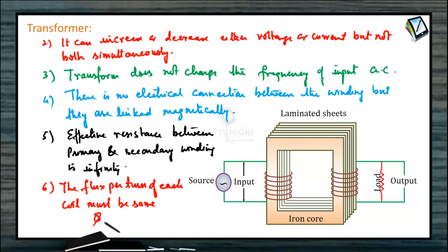So flux of secondary and flux of primary are the same. That is, we can write -dΦ/dt for secondary equals -dΦ/dt for primary. Let us consider: Np is number of turns of primary, Ns is number of turns in secondary.